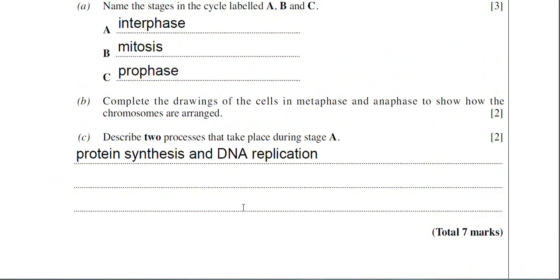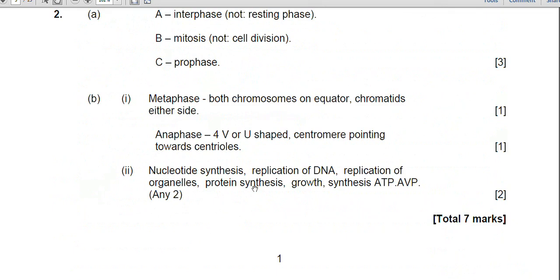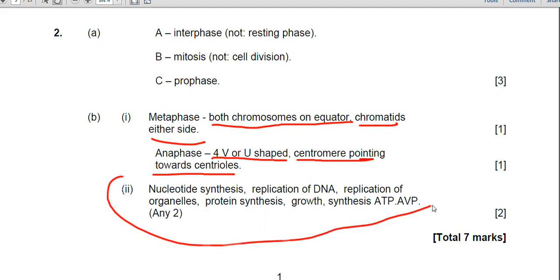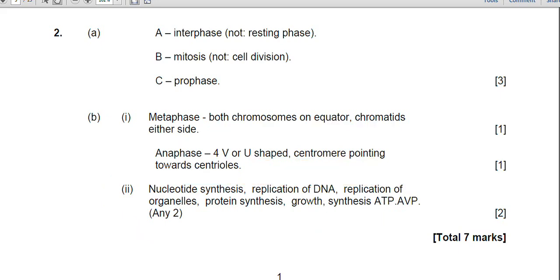That's the end of the second question. I think we can have a quick look at the mark scheme for this question just briefly. You can see there, part A, the answer straightforward. Part B, metaphase. The examiner is emphasising that you need both chromosomes on the equator with chromatids either side. And anaphase, four V or U shaped chromatids with the centromere pointing towards the centrioles, which I drew out for you. And there's some examples of processes that occur during interphase. We could have had synthesis of ATP as well. Right, and that's the end of question two.